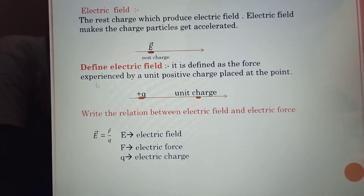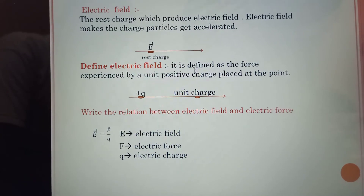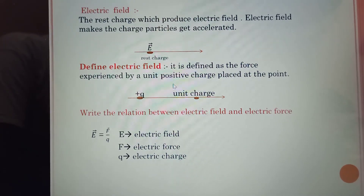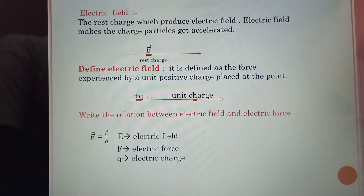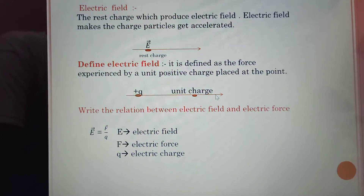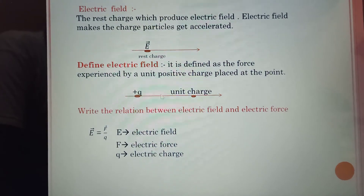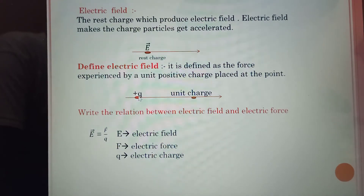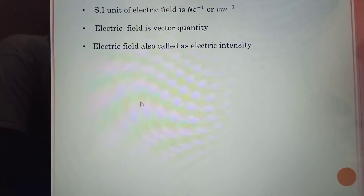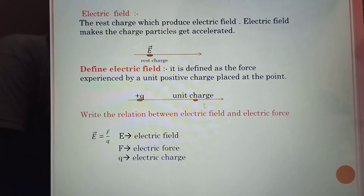Define electric field. Electric field is defined as the force experienced by a unit positive charge placed at that point. For example, in the diagram there are two charges — one is a point charge and another is a unit charge. The force experienced by the unit positive charge is called the electric field.